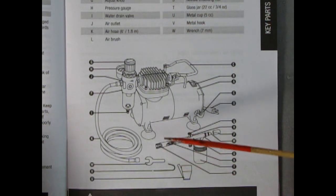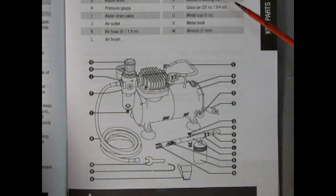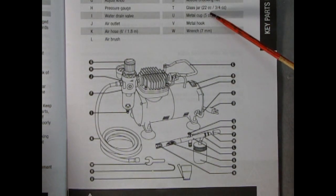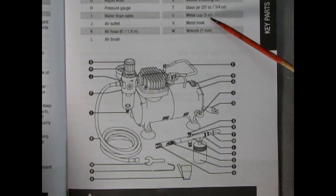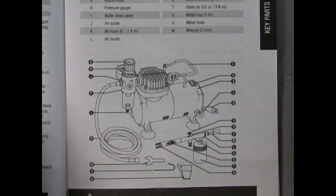Also the airbrush, airbrush nozzle, fluid needle, airbrush housing, protective cover, finger lever, adjustment screw, needle chucking nut, glass jar 22 cubic centimeters, the metal cup five cubic centimeters, metal hook and wrench. That's all in this illustration.